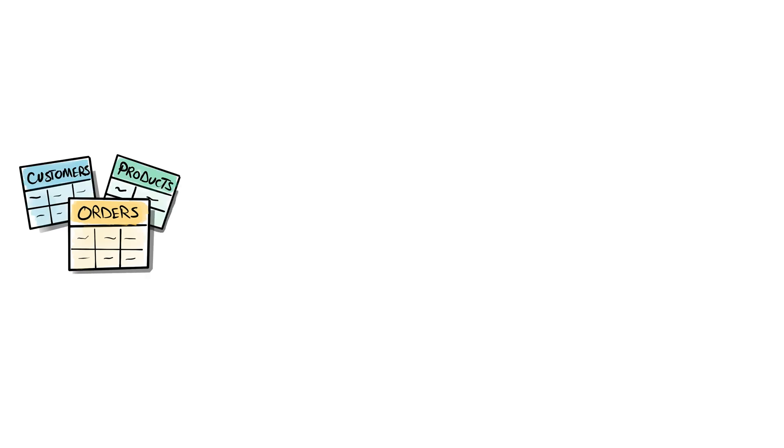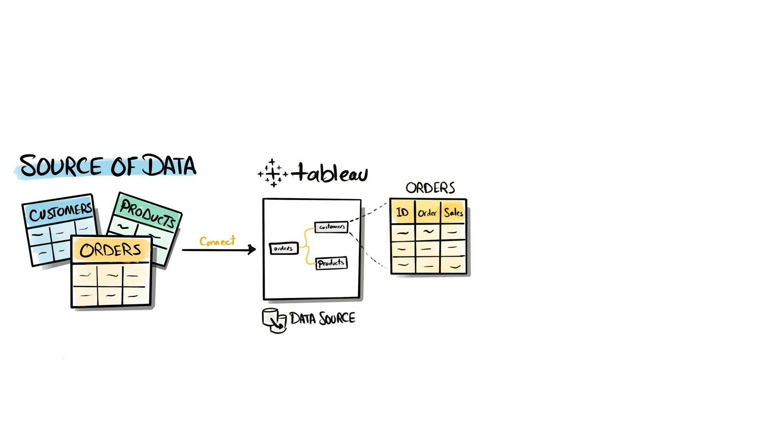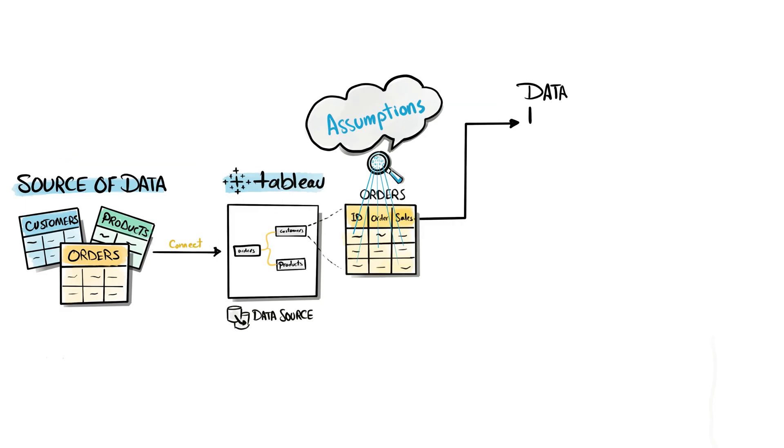After connecting our data to Tableau and building the data model in the data source, the next step is to check the metadata of the tables and the fields. Because once you connect your data to Tableau, Tableau can start analyzing the content of your data to make assumptions about the types and roles of each field in the data source.